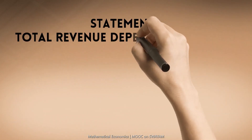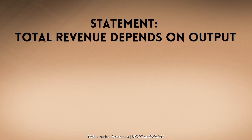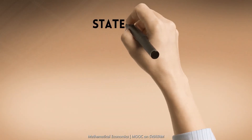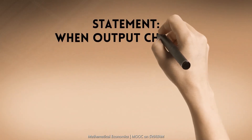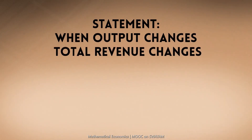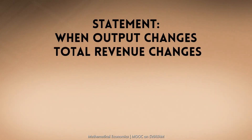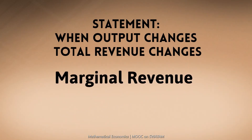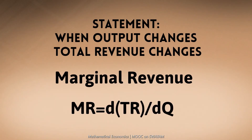Total revenue also depends on the output. The total revenue earned is the product of the price of the product and the quantity sold, and can be expressed as TR = F(Q). When output changes, the revenue changes. The change in total revenue per unit of output is called marginal revenue and can be expressed as MR = d/dQ of TR.